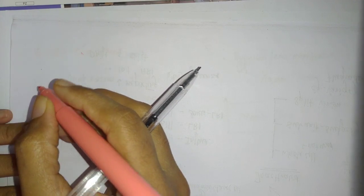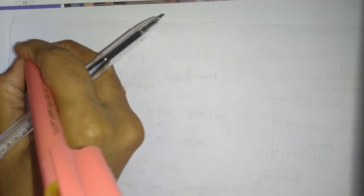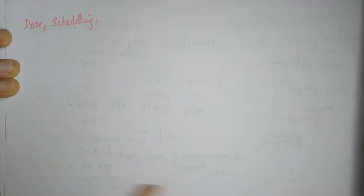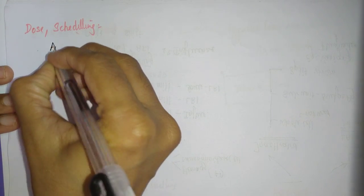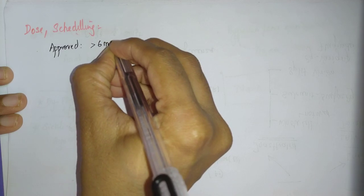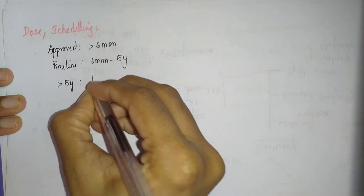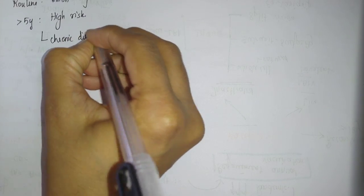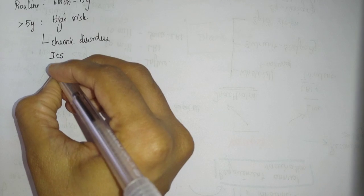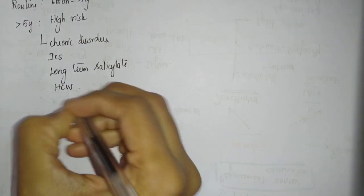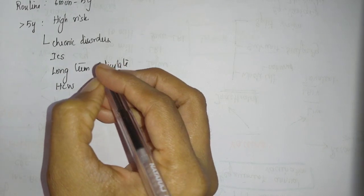Let's talk about dosing and scheduling. I'm talking mainly about the inactivated vaccines. It is approved for more than six months of age. Routine use is for six months to five years. More than five years, only in high-risk age groups or high-risk people: those having chronic disorders, any immunocompromised state, long-term salicylate intake, and healthcare workers who are getting repeated exposure to influenza.